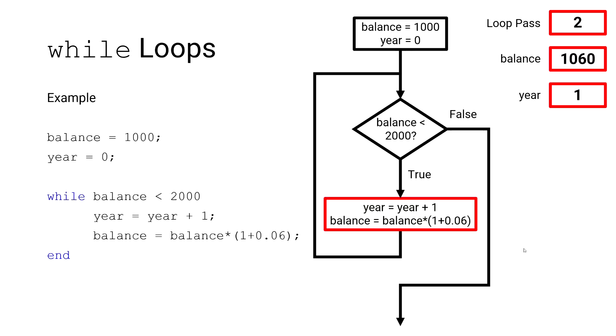Again, we advance the year by one. Now we're at year two, and we accrue interest again, and our current account balance is now $1,124 after two years. And this process continues for quite a few more loop passes. So I will quickly walk you through the loop passes until we get to number 12.